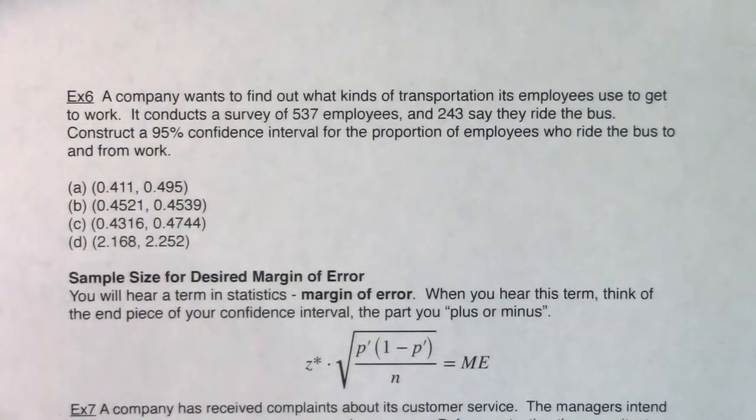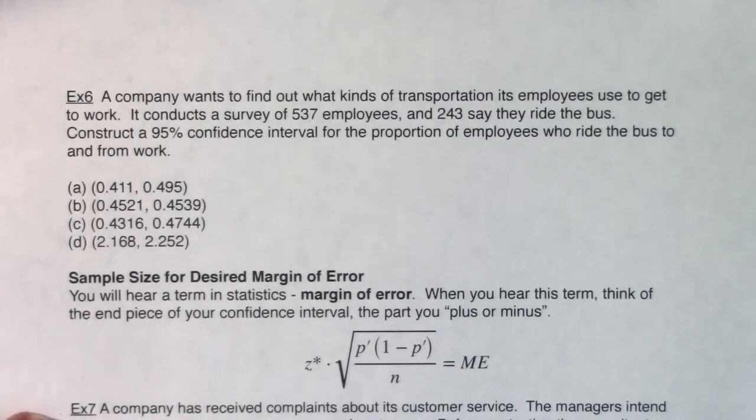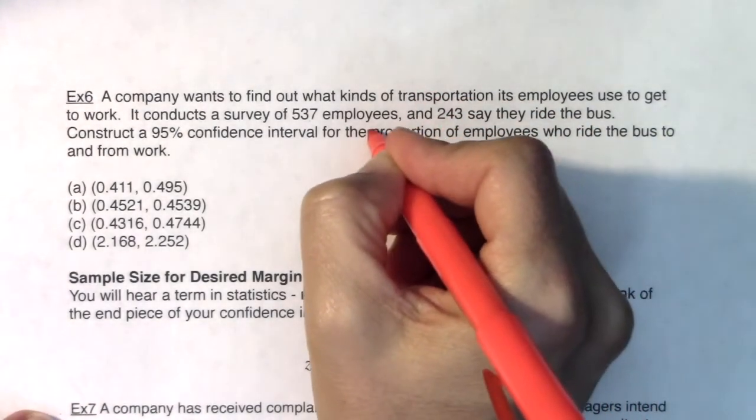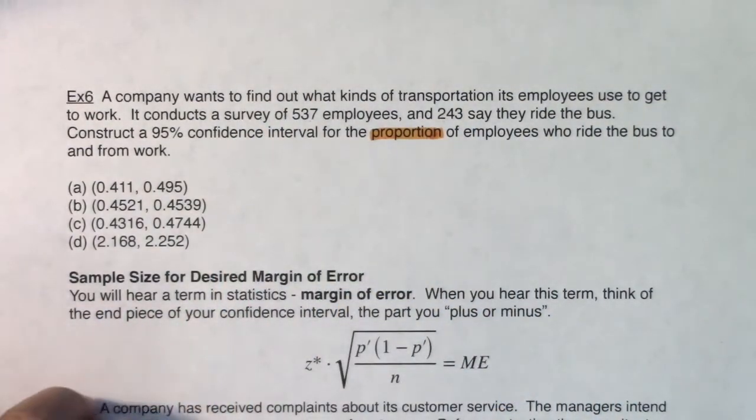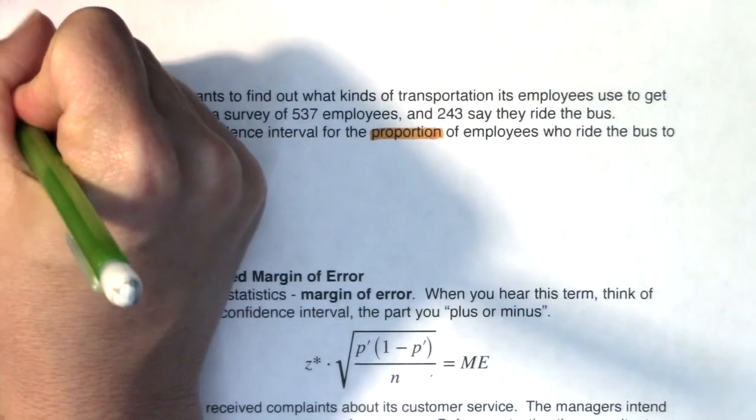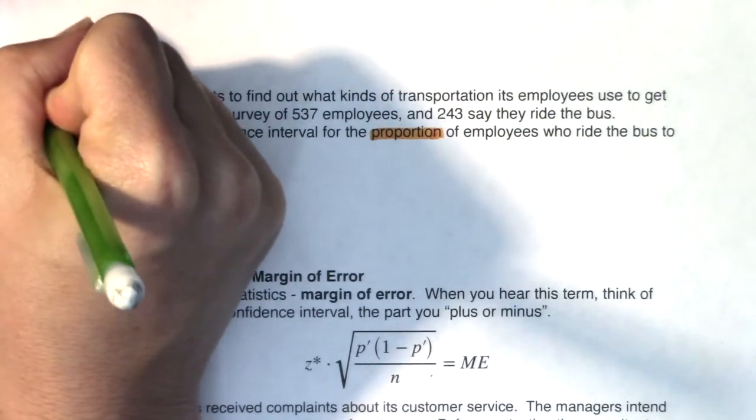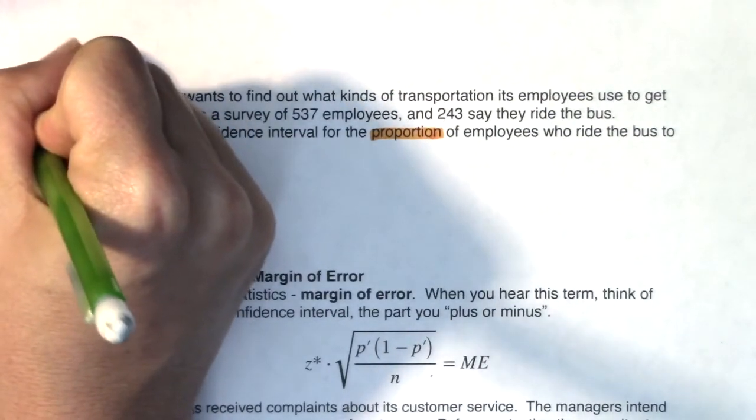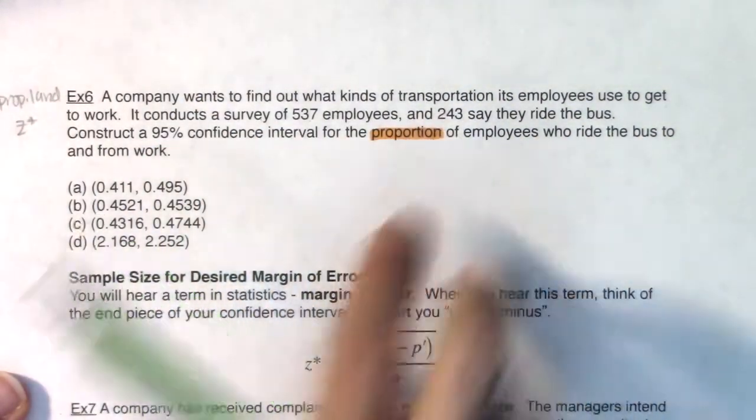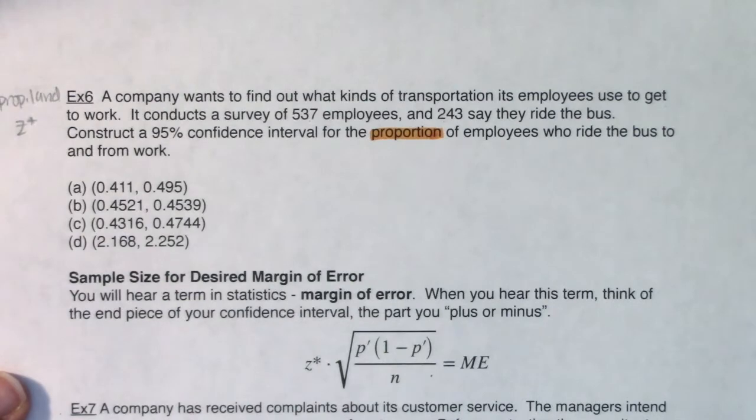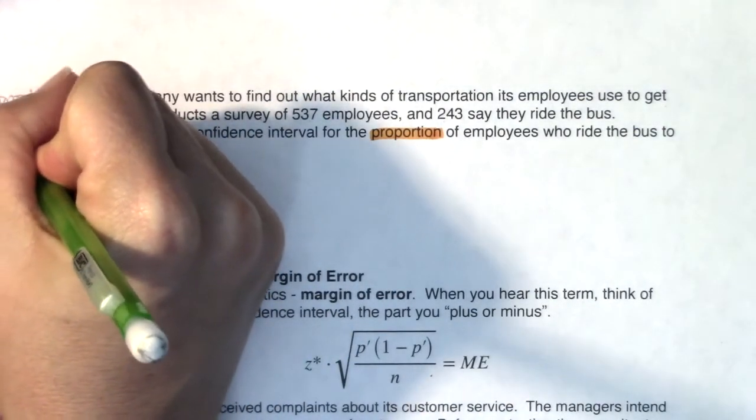One word that pops out to me immediately when I'm looking at this is the word proportion. Another phrase that pops out is confidence interval. I want a confidence interval, so am I in mean land or in proportion land? The word proportion gives it away. I'm in prop land, which means I'm going to use a z star critical value. The way this problem was written, I only have one sample. We only conducted this survey once, so I have a single sample.